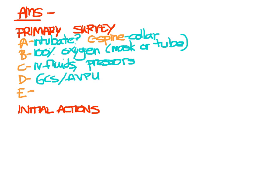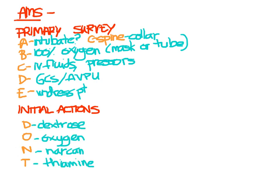E is exposure — undress your patient fully and do a quick head-to-toe exam looking for any signs of trauma, any patches like transdermal drug patches, or obvious infectious sources. For our initial actions, we look for reversible causes using our coma cocktail, which spells DONT: dextrose, oxygen, Narcan, and thiamine.